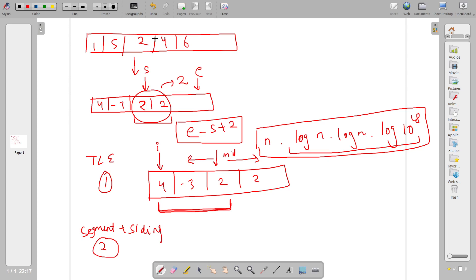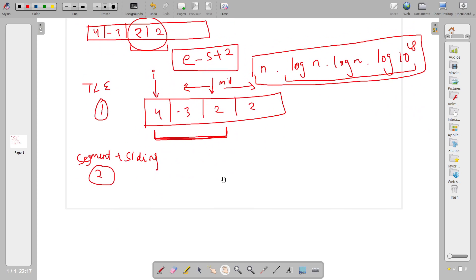The idea is you use segment trees and you use sliding window concept. What you can do is take this array 4, minus 3, 2, 2 and have your start and end pointers here. What you will do is basically first check is the GCD from start to end greater than 1 or not. If it is greater than 1 then the answer would be maximum of answer and end minus start plus 2. Then you have two options: either you extend the sliding window or you shrink it.